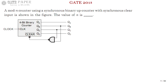A synchronous binary up counter means the same original clock is given to all flip-flops simultaneously, and for every clock pulse the count is incremented by one. It has a synchronous clear input — this is the clear bar, so it is called an active low clear input.